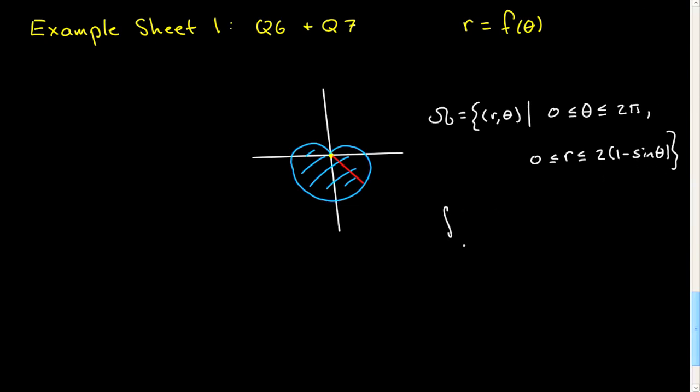You can set up an integral: theta from naught to 2π, r from naught to 2(1 minus sine theta), f of r theta r dr dθ. Very good. In the next screencast I'll discuss a little bit more about actually doing some integration.